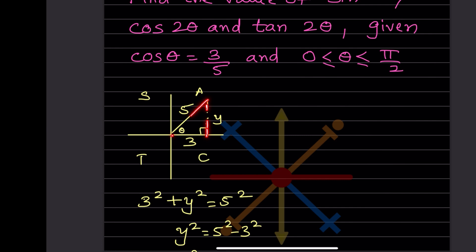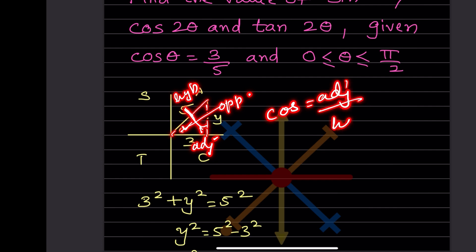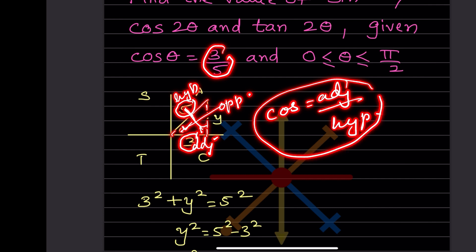We draw a right triangle with angle θ and the 90° at the corner. The hypotenuse is opposite the right angle. Since cosθ = adjacent/hypotenuse = 3/5, we write 3 on the adjacent side and 5 on the hypotenuse.